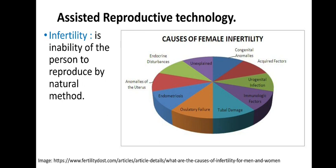In the case of a female, the causes of infertility can be grouped as congenital abnormalities or anomalies, acquired factors, urogenital infections, immunologic factors, tubal damage (referring to the fallopian tube), ovulatory failure, endometriosis (a condition where uterine tissue grows in regions like the fallopian tubes), anomalies of the uterus (the uterus might be very small), endocrine disturbances like hormonal imbalances, and also unexplained causes where no available technique can identify a reason for infertility.